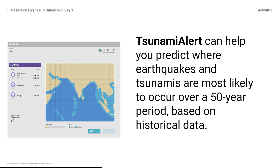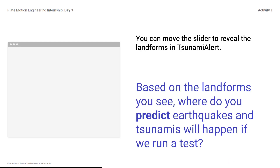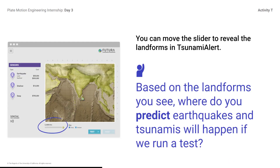Investigating Earthquakes with Tsunami Alert. Tsunami Alert can help you predict where earthquakes and tsunamis are most likely to occur over a 50-year period based on historical data. You know that earthquakes and tsunamis are unpredictable events — you can't predict exactly where or when they will happen. However, you can use the locations of the plate boundaries and data from past quakes and tsunamis to help you think about where they are most likely to occur in the future. For this part of your research, you will each use your own map to record earthquake and tsunami locations as you run tests in Tsunami Alert. Students, view the map of the Indian Ocean Region sheet. You can move the slider to reveal the landforms in Tsunami Alert.